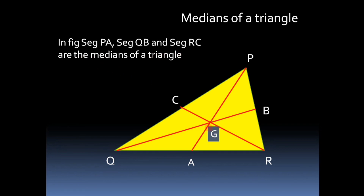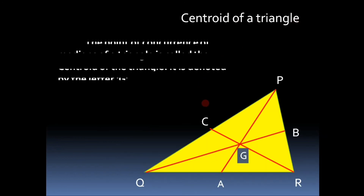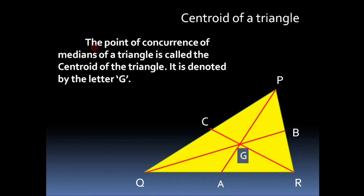The point of intersection of these three medians is called the centroid of a triangle. The point of concurrence of medians of a triangle is called the centroid of the triangle. As the three medians intersect at a single point, that point is called the centroid and it is denoted by the letter G.